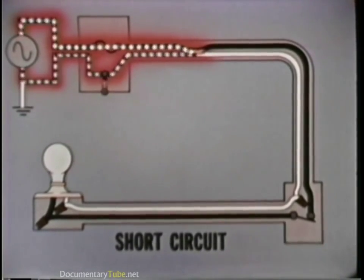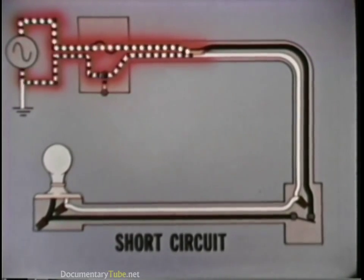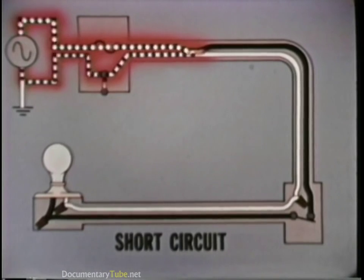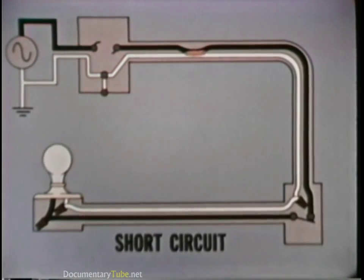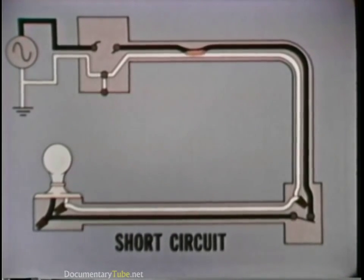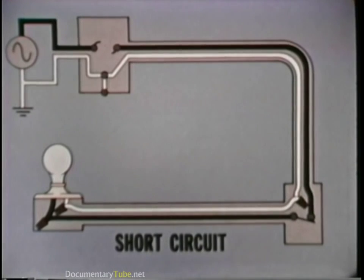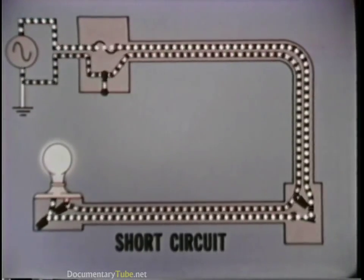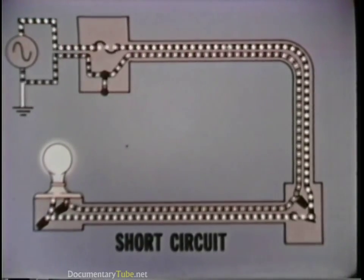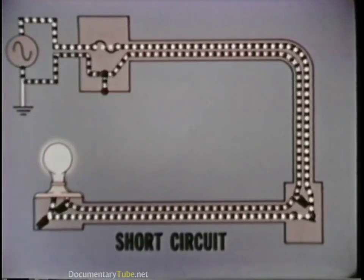However, since the circuit is properly protected, the fuse or circuit breaker reacts to the excessive current and blows or trips, stopping the current flow. To correct the short, the damaged wires must be separated and in most cases replaced. Then, replacing the fuse or resetting the circuit breaker restores the circuit to normal operation.